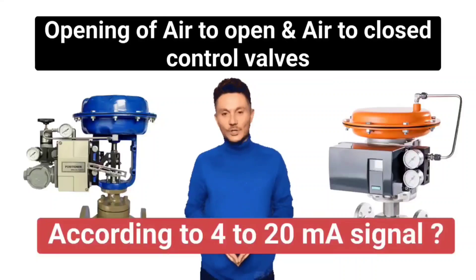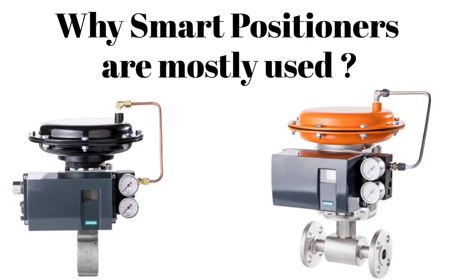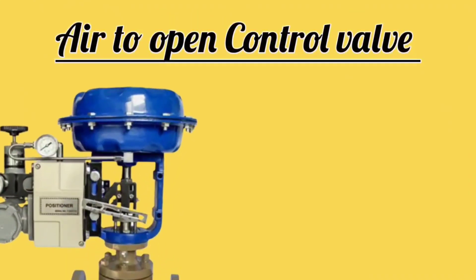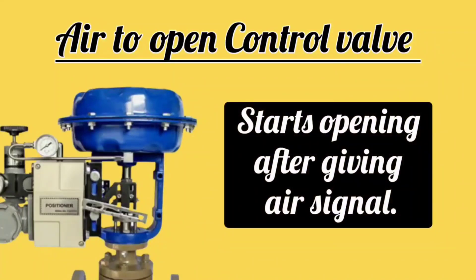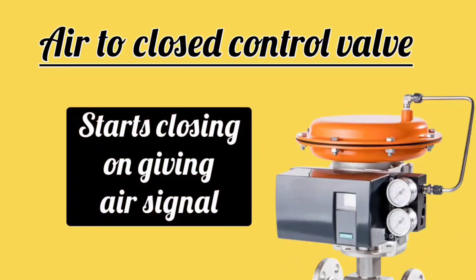According to 4 to 20 milliamp air signal, we will also discuss why smart positioners are mostly used. Air to open control valve starts opening after giving air signal. In this control valve, air is supplied from the bottom of the diaphragm. And air to close control valve starts closing on giving air signal. In this control valve, air signal is supplied above the diaphragm.